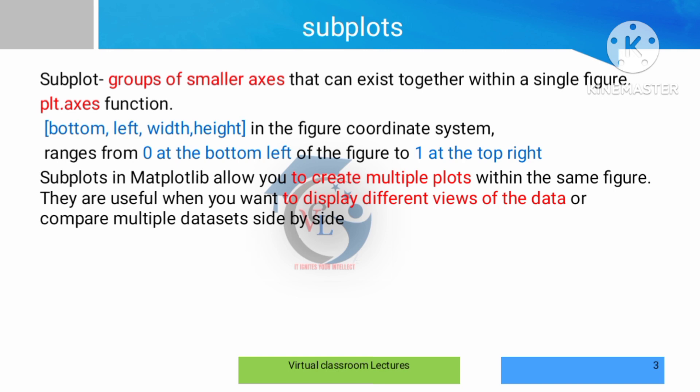Subplot — by the name itself we can understand. When plotting, we look at line plots, scatter plots, and more plots. In a single graph or chart, having one small plot is a subplot. So when more than one plot appears in one graph, each and every small plot is called a subplot.